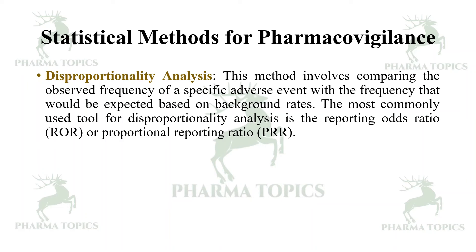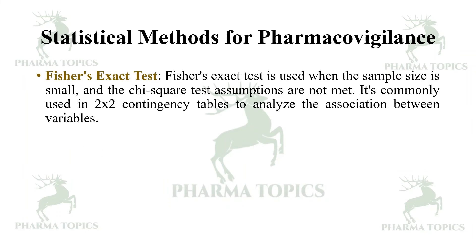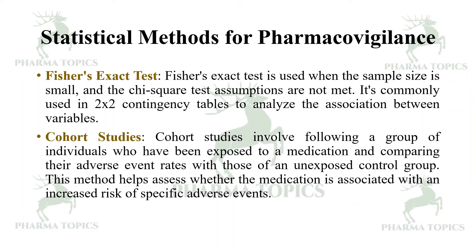Disproportionality analysis involves comparing the observed frequency of a specific adverse event with the frequency that would be expected based on background rates. The most commonly used tools for disproportionality analysis are the Reporting Odds Ratio (ROR) and the Proportional Reporting Ratio (PRR). The chi-square test is used to assess the association between two categorical variables, such as the occurrence of an adverse event and use of a particular medication. Fisher's exact test is used when the sample size is small and chi-square assumptions are not met, commonly using a 2×2 contingency table.